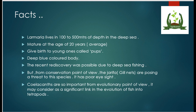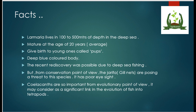Coelacanths are extremely important from an evolutionary point of view, as they may represent a significant link in the evolution of fishes into tetrapods. According to many evolutionary theories, the first life appeared in aquatic environments. The transition from aquatic to terrestrial life — like amphibians and reptilians — required intermediate steps, and the Coelacanth, like the lungfish, represents such a transitional feature, making Coelacanthiformes a significant evolutionary link.